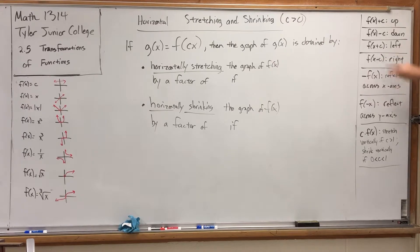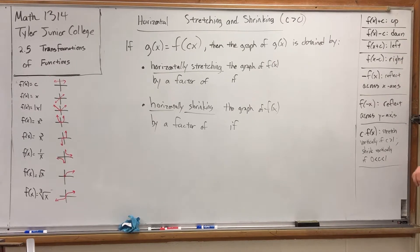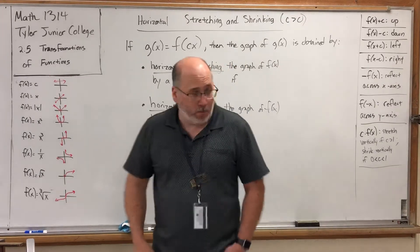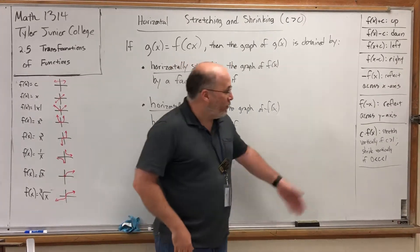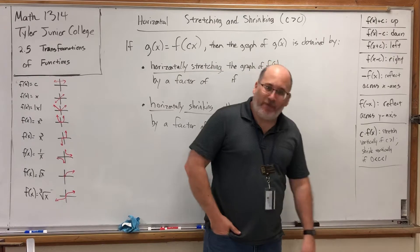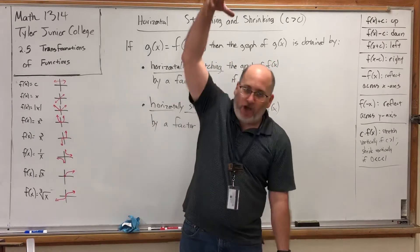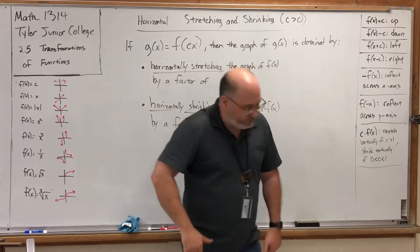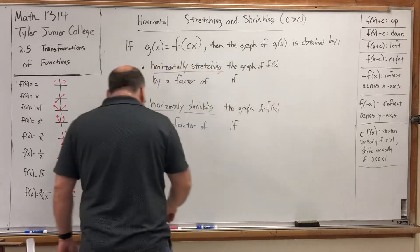But when we did stuff inside the function directly to the x, it did the opposite of what we expected — plus moved it to the left, minus moved it to the right. We have the same kind of dichotomy here. When we multiply outside the function it does what we expect: big number stretch, small number shrink. But here it's the reverse.